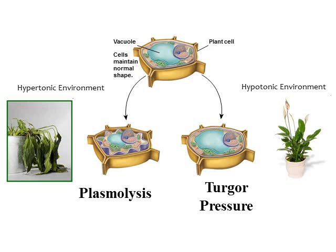Comparing this to a plant cell: in a hypertonic environment, water flows out, the cell shrivels — in plants this is called plasmolysis. If you forget to water a plant, the leaves droop because cells lose water. In a hypotonic environment — basically watering the plant — water flows into the cell, building up turgor pressure that pushes against the cell wall. Plant cells won't burst because of the cell wall, and this turgor pressure allows the plant to stand up. So plant cells want to be in a hypotonic environment.